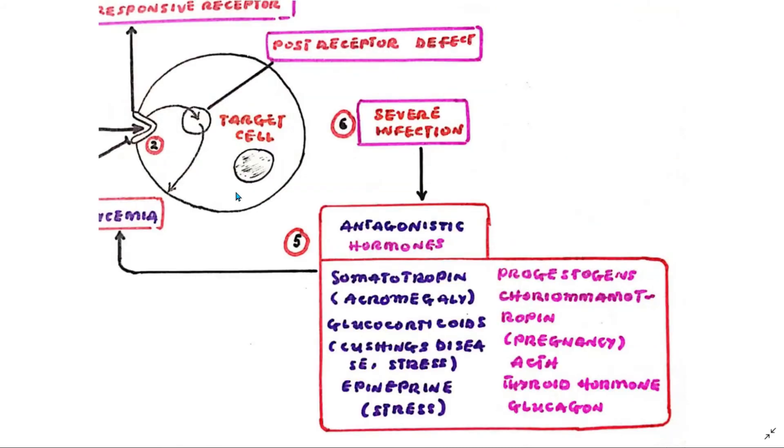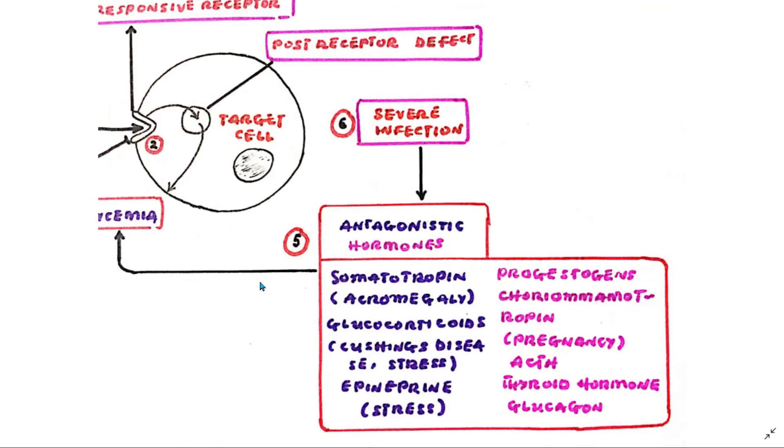The development of diabetes mellitus is promoted by an increased release of antagonistic hormones. Among these are somatotropin, as in a case of acromegaly, and also glucocorticoids in Cushing disease or in stressful situations. This is sometimes called steroid diabetes.